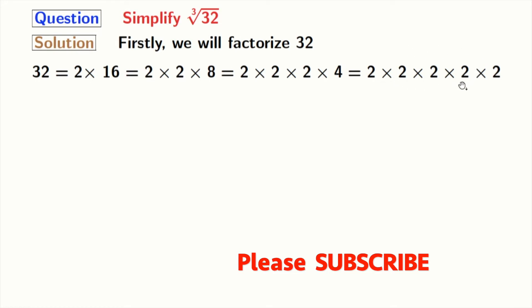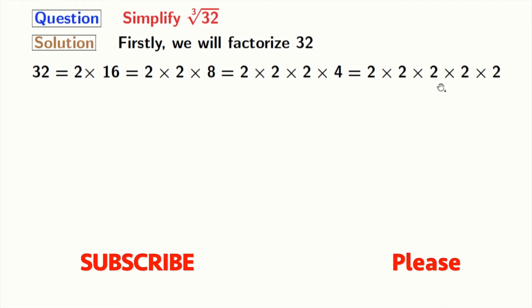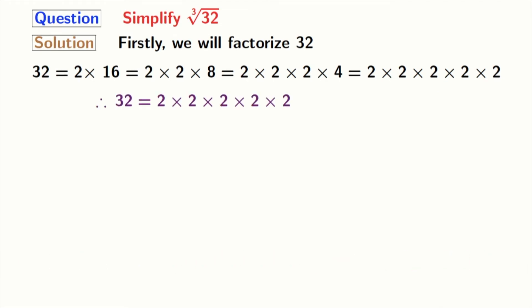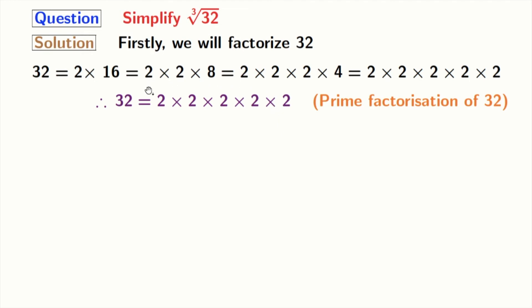So we will not factorize further. Finally, we have 32 as the product of 5 twos. Note that this is the prime factorization of 32.